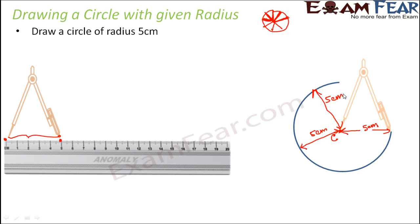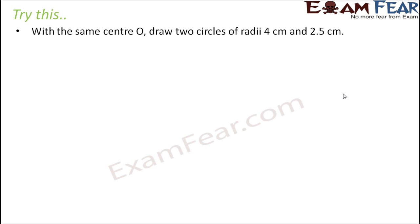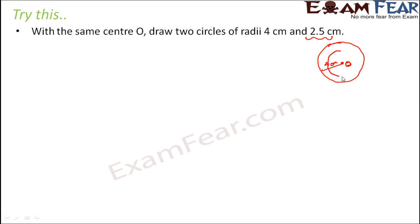It is that simple to draw a circle of a given radius. Now let's try this: with the same center O, draw two circles of radii 4 centimeters and 2.5 centimeters. Let's first have a rough sketch in mind. We assume there is just one center — let's call it O — and we draw two circles for the same center: one circle of radius 4 centimeters and another of radius 2.5 centimeters. Since the second radius is smaller, the second circle would be inside the first.